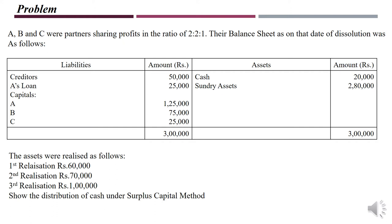In piecemeal distribution, we first pay secured creditors, then unsecured creditors. In this case, we have only creditors listed, so first we pay the creditors, then A's loan, and then the remaining amount is distributed among the partners.